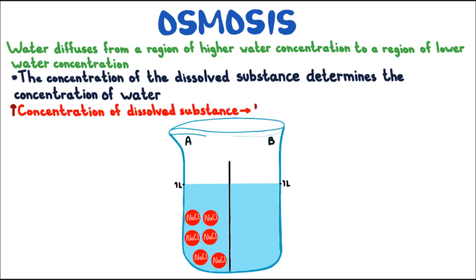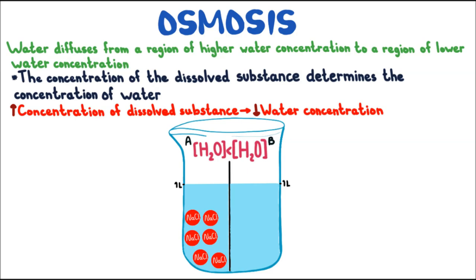Increased concentration of dissolved substances decreases the concentration of water. So the concentration of dissolved substances inside A is more than inside B, which has no sodium chloride. Thus the concentration of water is less in compartment A compared to site B. Therefore, water diffuses from site B to site A — from higher water concentration to lower — and we see the height of column A rises and that of B falls. Water diffuses to side A to equalize its concentration until there is no water concentration gradient. This is exactly what we call osmosis.